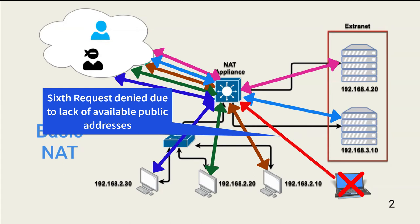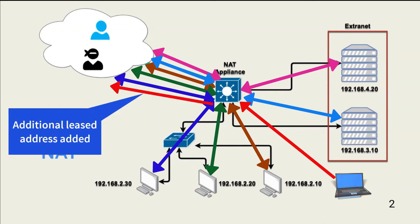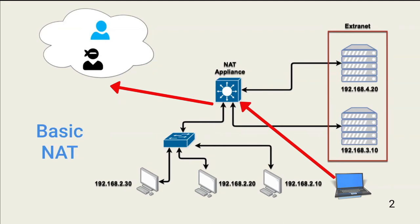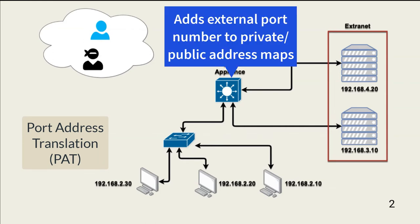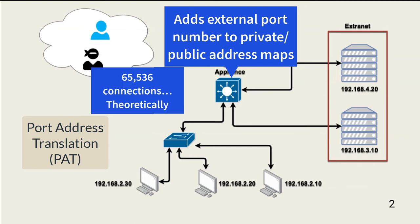The organization would have to lease enough public addresses to ensure sufficient simultaneous connections to enable unhindered business operation. There is a more efficient and cheaper way. Port address translation, or PAT, is a NAT variation that operates at OSI layer 4. It adds an external port number to the mapping of internal and external addresses. This theoretically allows 65,536 internal devices to share a single public address.